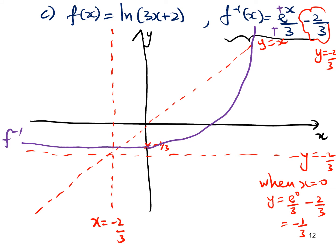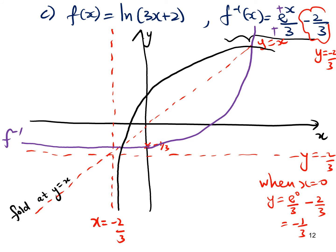To sketch f, fold the paper at the line y equals x, which reflects f inverse to give f. The graph of f never touches x = −2/3, intercepts the y-axis at y = −2/3... actually intercepts the x-axis at −1/3. So this is the graph of both f and f inverse.